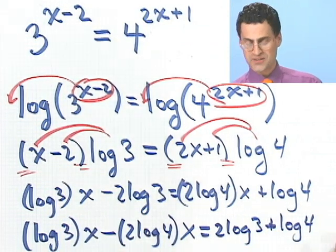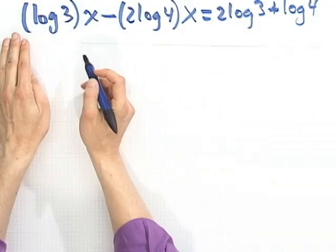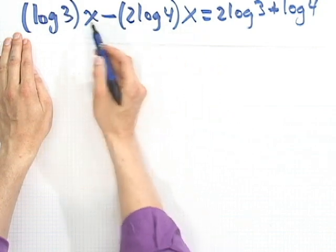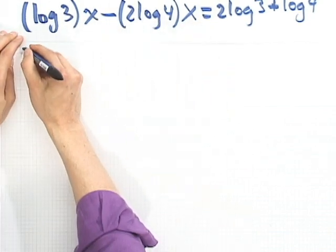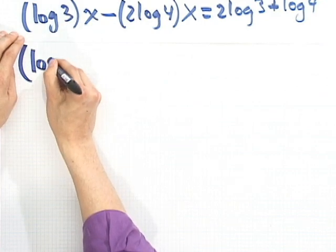And what does that equal? Well, I'll bring the constant stuff to this side. So I'll see a 2 log 3 plus log 4. So I want to solve this. I can actually simplify this quite a bit. Let's take a look at how we can actually simplify this if we wanted to.